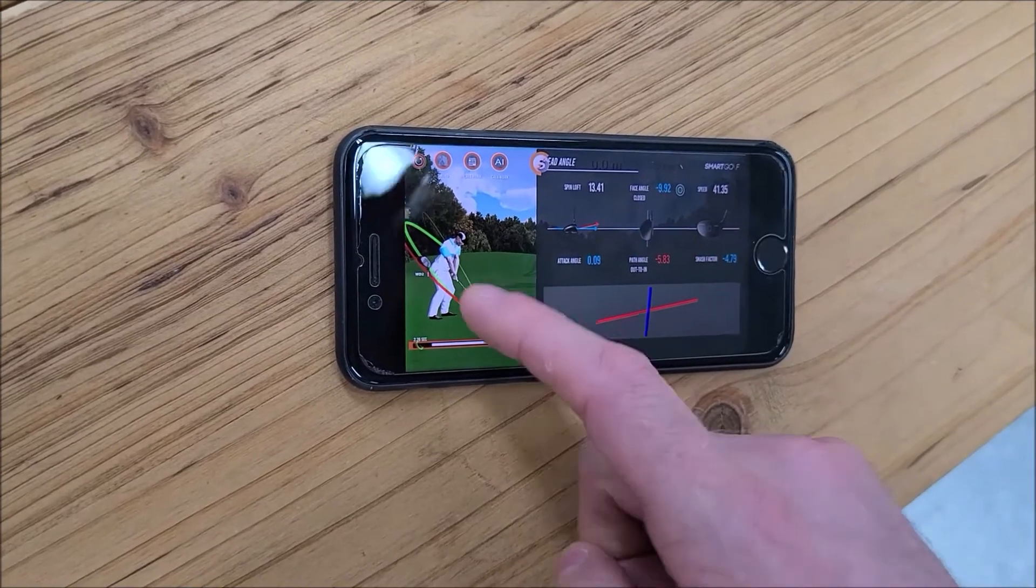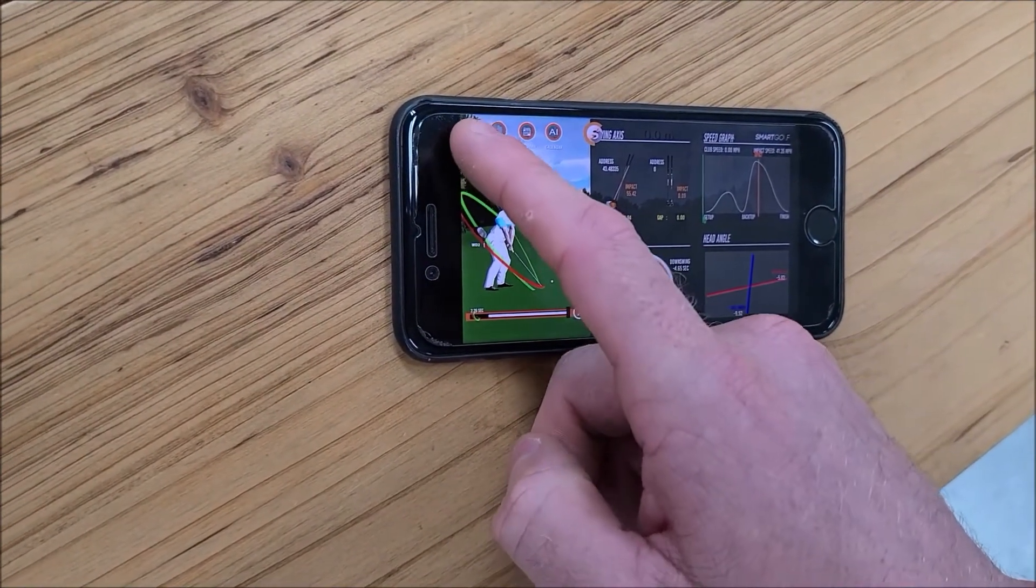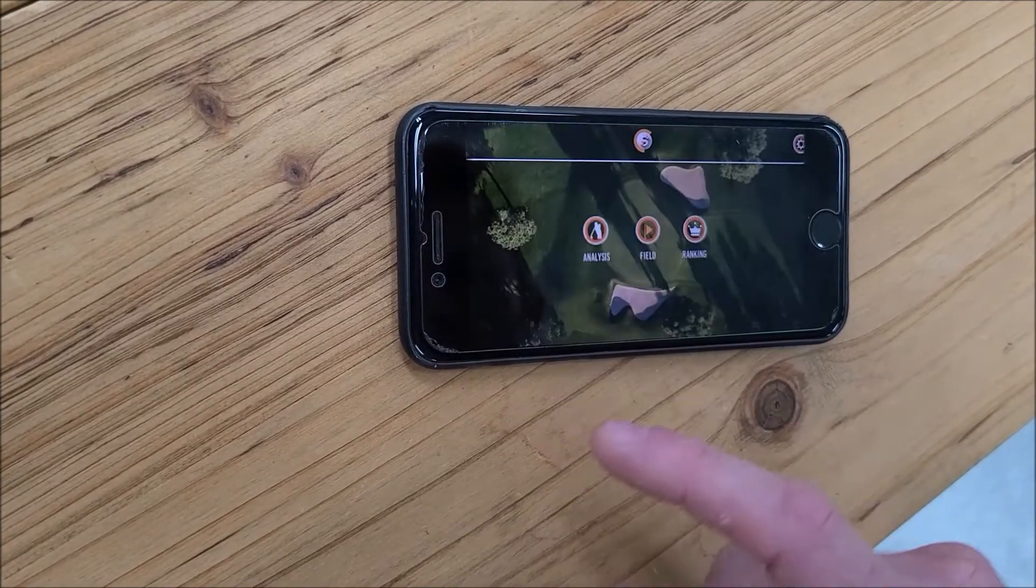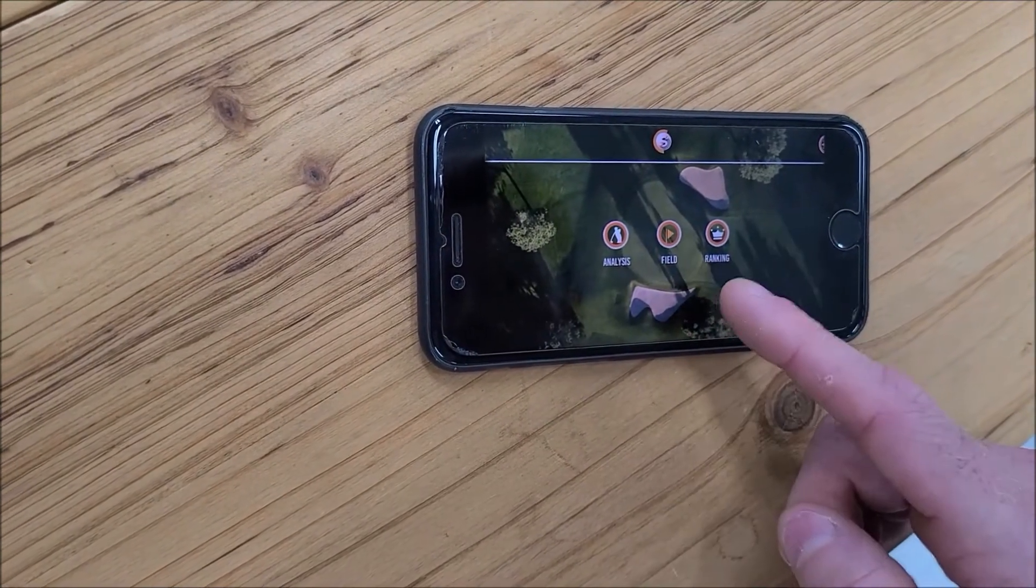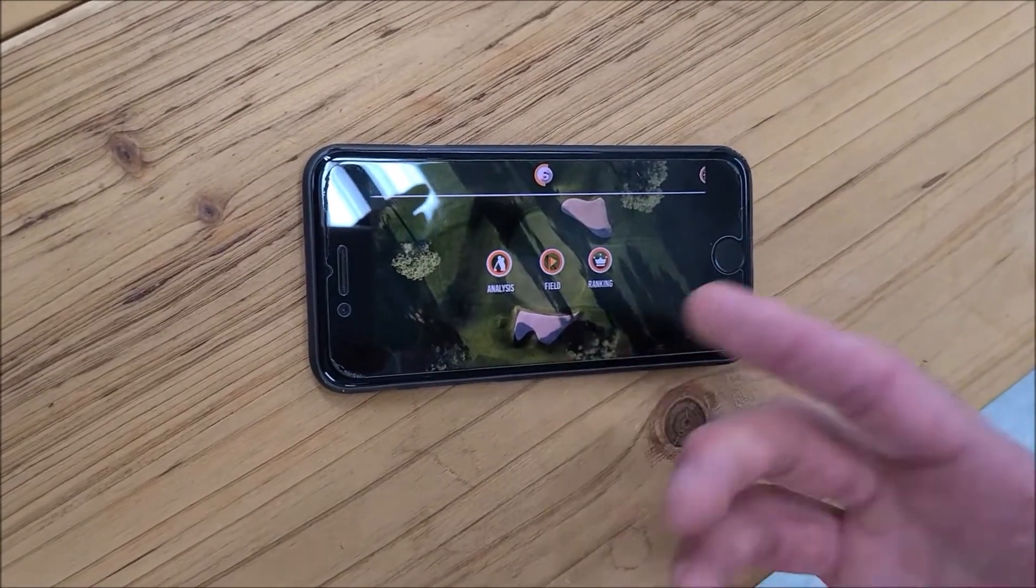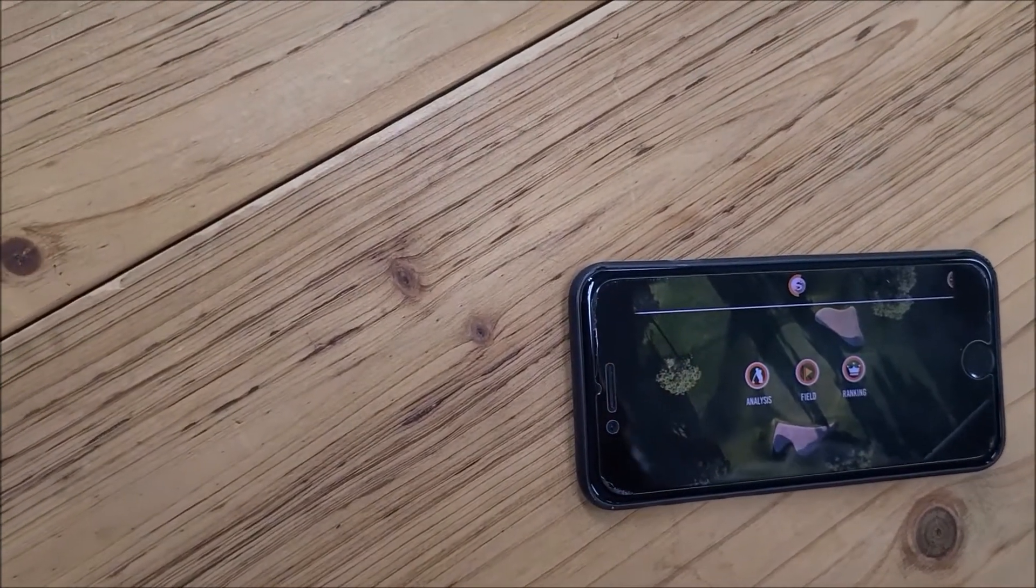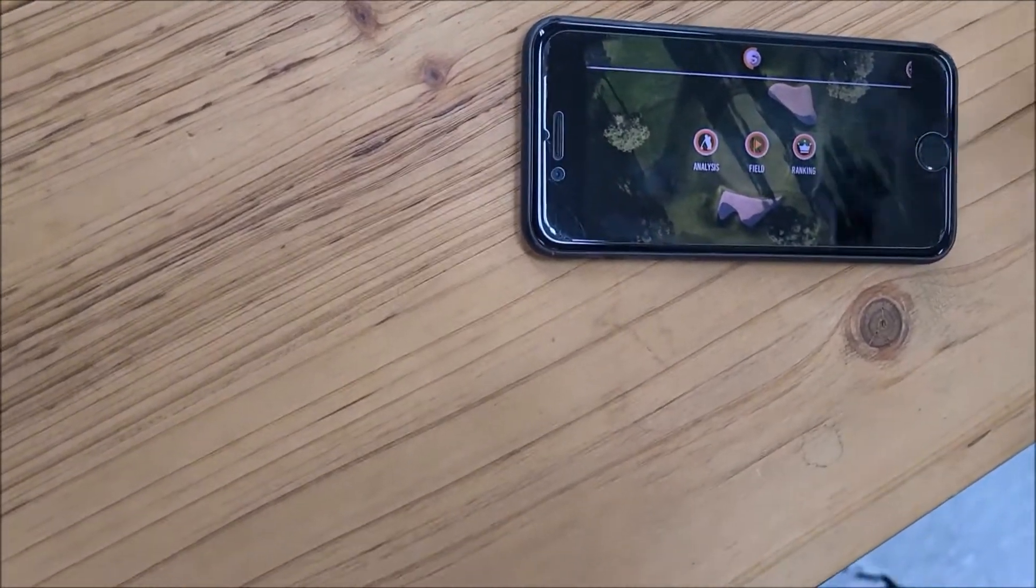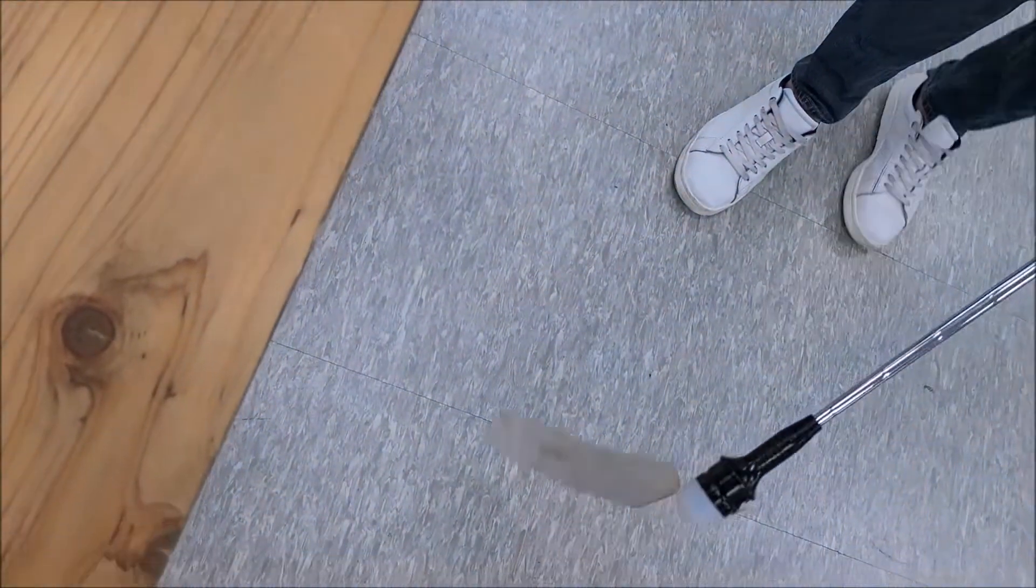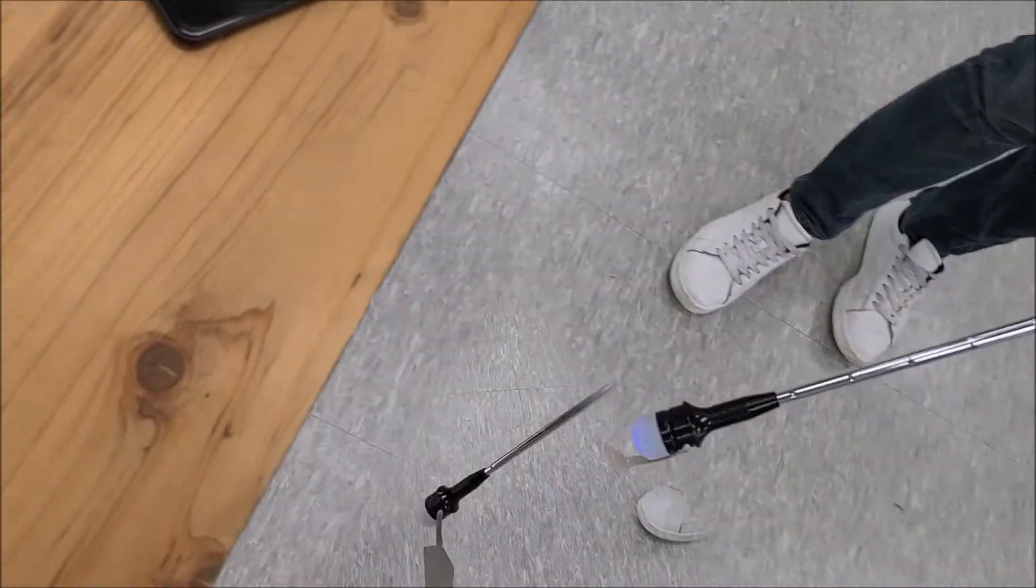We also have the Field mode and the Ranking mode - all of these modes are available for you to use. Whenever we use them, we press this button which I showed before. When we press it, it goes red and then blue means it's connected and ready to go.